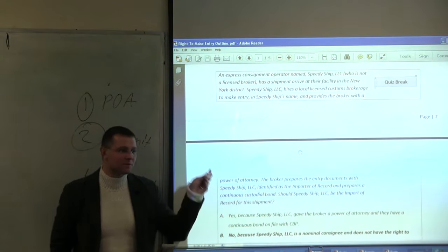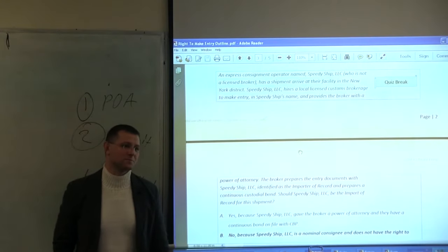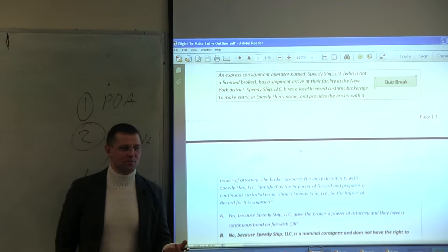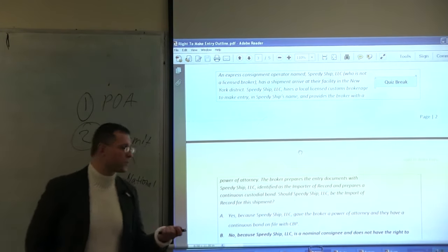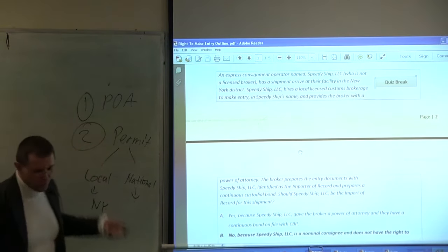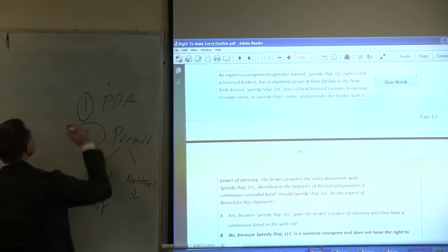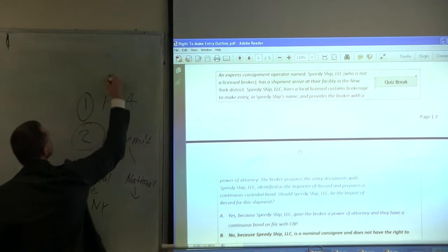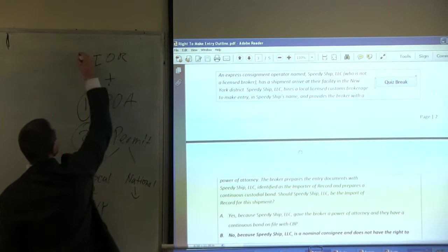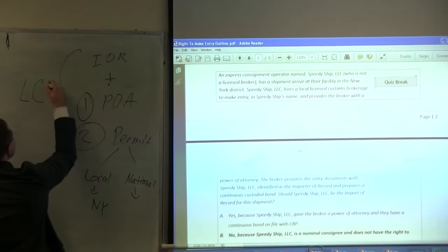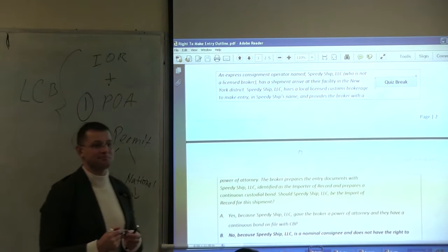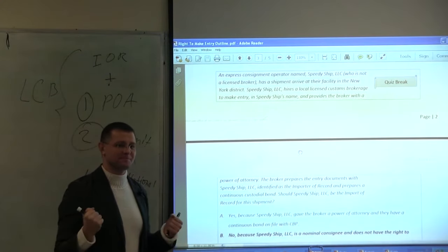That's the point of this exercise. So nominal consignee can go to the licensed customs broker. The licensed customs broker has to be authorized, meaning they have to have a license, power of attorney, and permit. Plus, they must be acting as importer of record. All that is a heavy burden of licensed customs broker LCB. Yeah? Make sense? Moving on. Any questions?